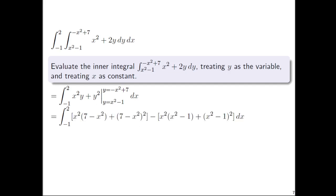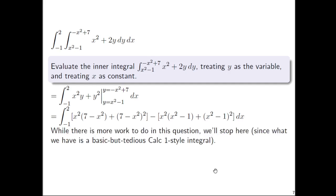So it gets a little messy when you do that, but it should look like this. So I tried to use some parentheses and square brackets to hopefully make it clear what's going on: x squared and then y is replaced with negative x squared plus seven, which I wrote as seven minus x squared, plus y squared. So plus quantity seven minus x squared, close parentheses squared, that's all in square brackets minus, and then same deal, just plug in x squared minus one for y this time.